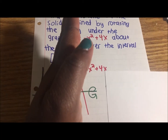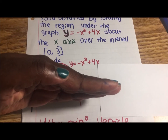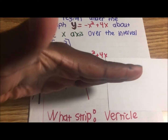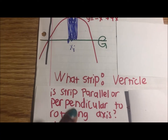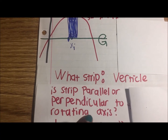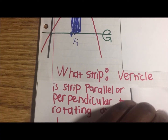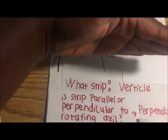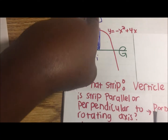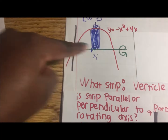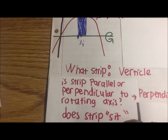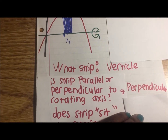The strip is vertical and the rotating axis is the x-axis, which is horizontal. So the strip is perpendicular to the rotating axis.